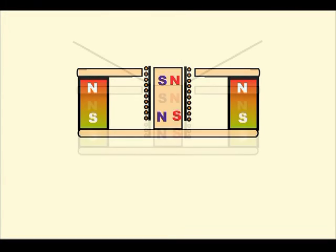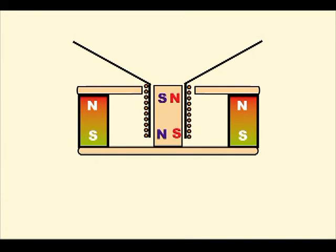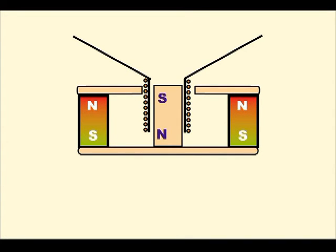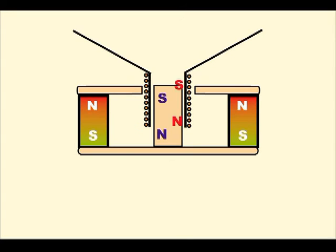A paper cone is glued to the coil, so it moves together with it, causing air movements which translate into sounds in the ears of the listeners.